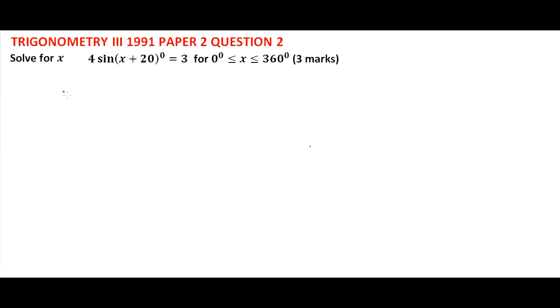For x, 4 sine into bracket x plus 20 degrees equals 3, for 0 degrees to 360.